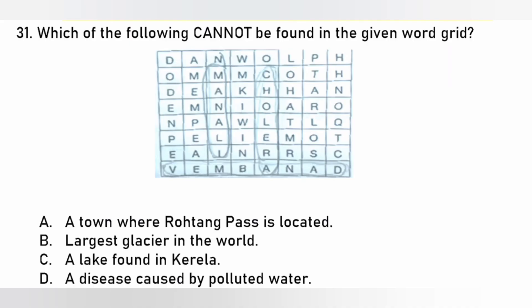Which of the following cannot be found in the given word grid? A. Town where Rohtang Pass is located — Manali. B. Largest glacier in the world — Lambert. C. Lake found in Kerala — Vembanad. D. Disease caused by polluted water — Cholera. The answer is B. Lambert.